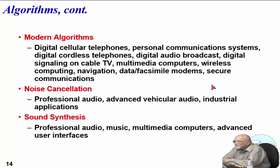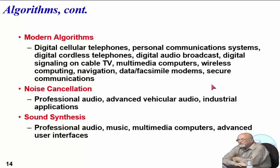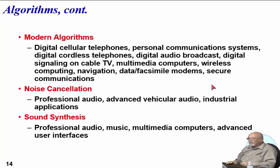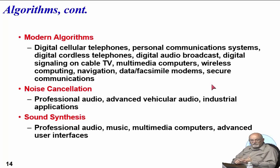Some of the modern algorithms that exist: digital cellular phones, personal communication systems, wireless phone, digital audio broadcast, digital signaling on cable TV, multimedia computers, wireless computing, navigation — all these things are important as far as modern algorithms. Remember that one company — all they did was develop algorithms. A fast algorithm that didn't use as much memory and did the job adequately meant they sold lots of licenses.